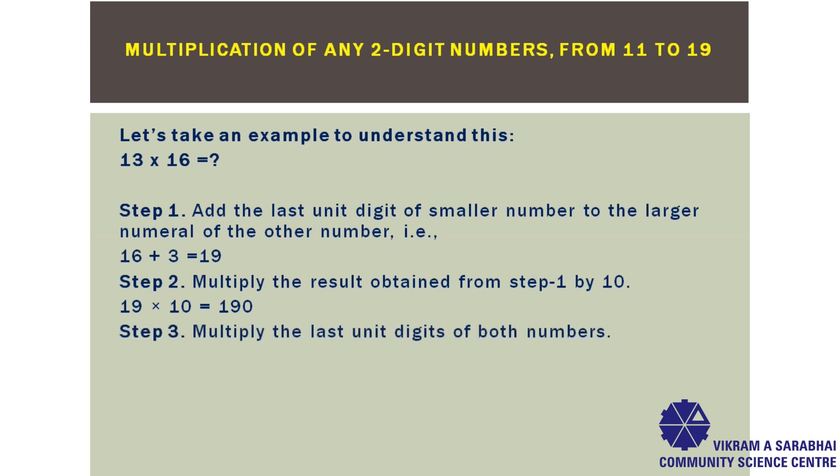Then, multiply the last unit digits of both numbers, that is, 3 from 13 and 6 from 16. So, we get 3 multiplied by 6 is 18.